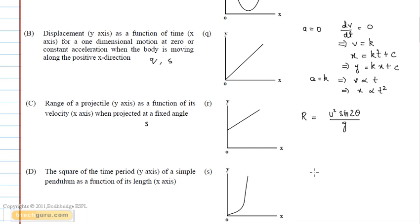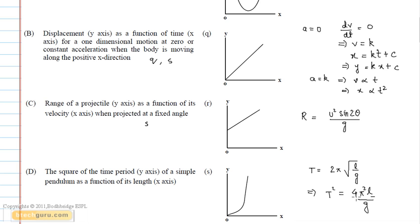The time period of a simple pendulum is given by T = 2π√(L/g), where L is the length of the pendulum. So T² = 4π²L/g. According to this equation, the square of the time period is directly proportional to the length of the pendulum. Hence, the graph will be linear and pass through the origin, so option Q satisfies this condition. Therefore, the correct answer for question D is option Q.